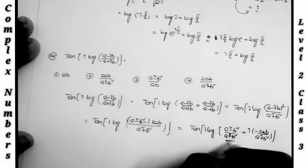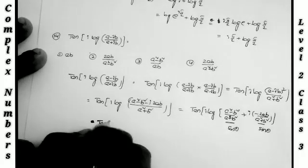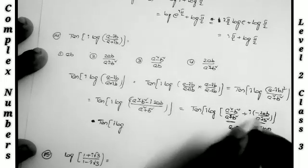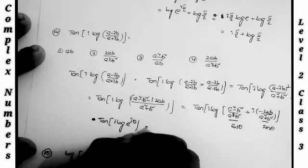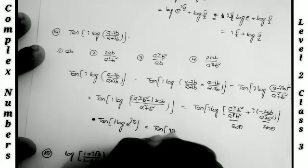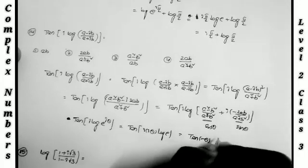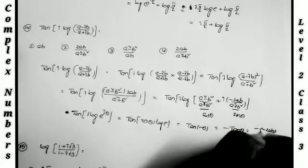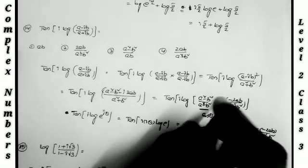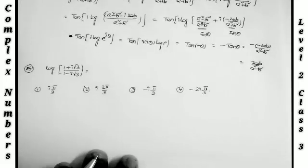Setting cosθ = (a² - b²)/(a² + b²) and sinθ = -2ab/(a² + b²), the expression becomes tan(i·log(cosθ + i sinθ)) = tan(i·log(e^(iθ))) = tan(i·iθ·log e) = tan(-θ) = -tanθ. Since tanθ = sinθ/cosθ = (-2ab)/(a² - b²), the answer is 2ab/(a² - b²), the second option.